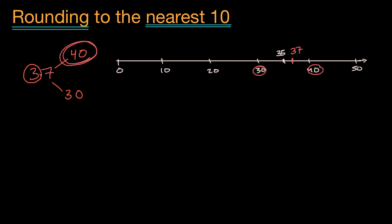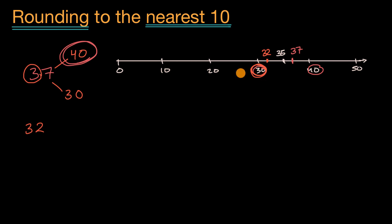What if someone said: 32 rounded to the nearest 10? Well, 32 is right over here on the number line. It's between three tens and four tens, but it's a lot closer to three tens. So 32 rounded to the nearest 10 is 30.